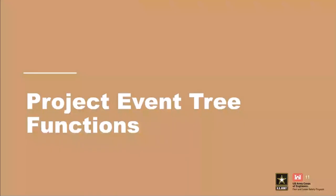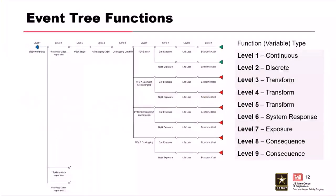Next we'll discuss the different types of functions used in project event trees. This example project event tree encompasses all possible function or variable types: continuous, discrete, transform, system response, exposure, and consequences. The following slides will walk through each function type, define them, and discuss their common applications in risk analysis. Note that while we use level numbers in this example to reference different function types, this will look different for each project in practice.